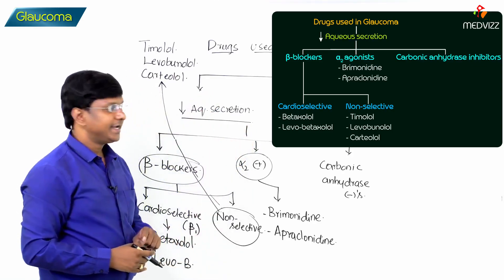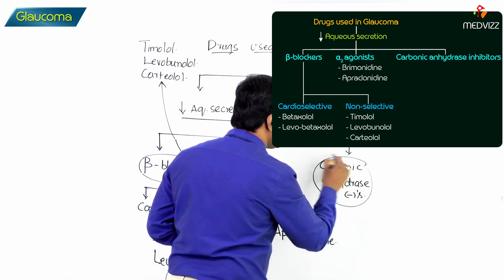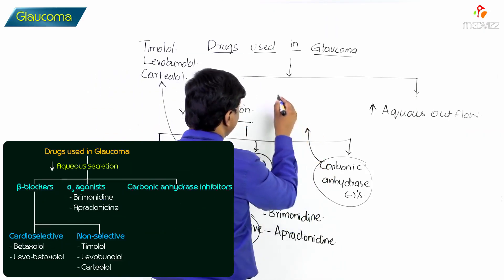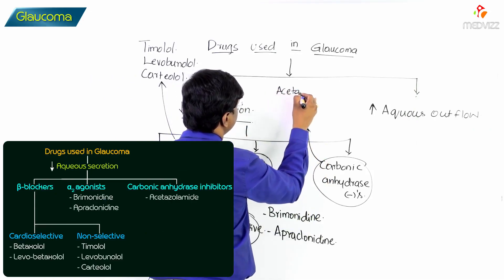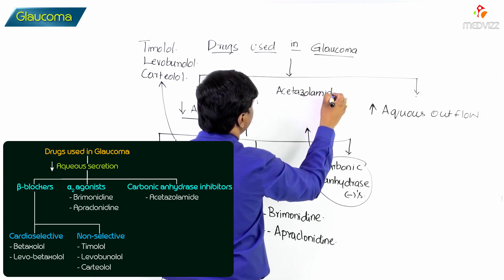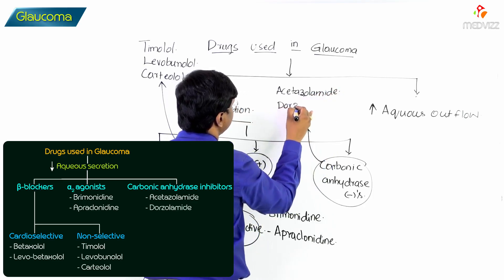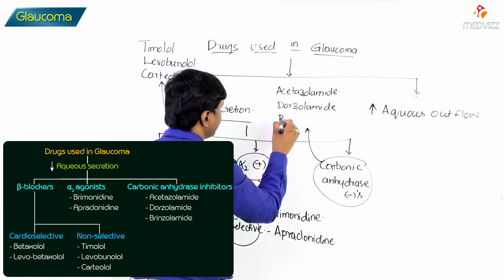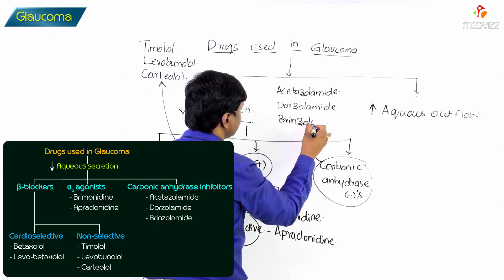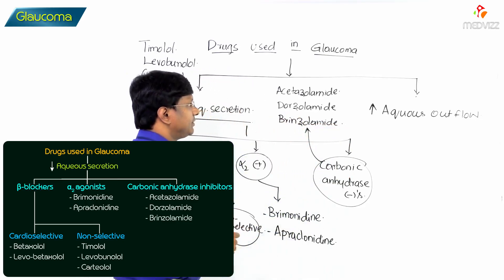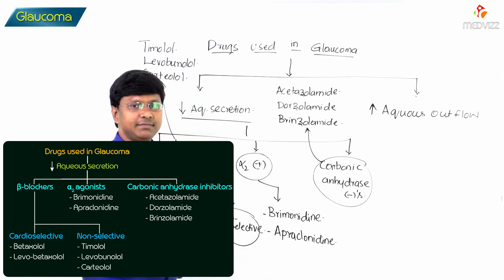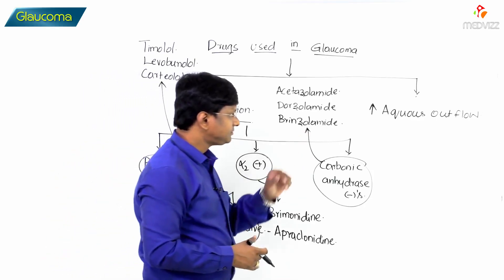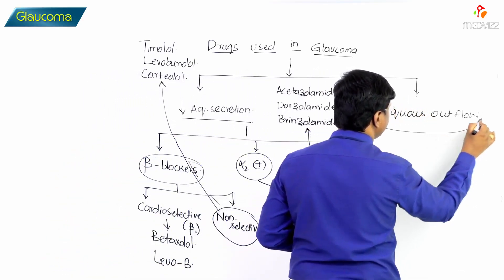The carbonic anhydrase inhibitors which will reduce the aqueous humor production are acetazolamide, dorzolamide, and brinzolamide. These are the group of drugs which will reduce the aqueous humor production by inhibiting the carbonic anhydrase enzyme. These drugs are also in the group of diuretics as well.